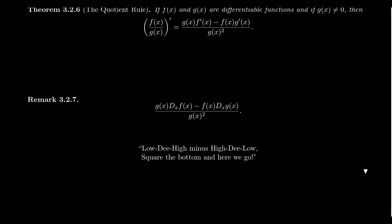You can put this poem to music if you prefer. The square kind of makes me think of a square dance: 'Low d high mighty high d low, square the bottom here we go.' There's also a second verse that serves as a warning: 'High d low minus low d high, square the bottom now you die.' If you mix up the order and end with 'high d low' rhyming with 'die' instead of 'go,' you'll know you've written the wrong quotient rule.